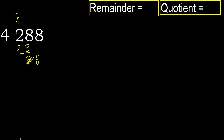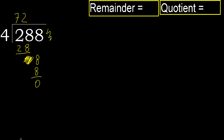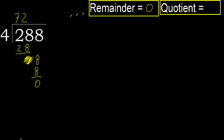Bring down 8. 4 multiplied by 3 is greater. 4 multiplied by 2 is 8, it is not greater. Subtract. Next — there is no remaining number, therefore finish it.